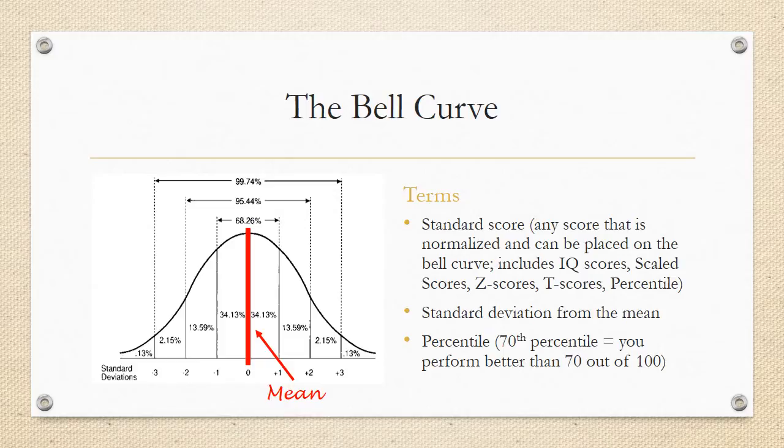So standard score, there are many of them. And often you can hear IQ scores, scaled score, Z scores, T scores, percentiles. The standard deviation is how far away from the mean is the score placed. The mean is directly in the center of the bell curve, as you can see with the red line there. And standard deviations sit on either side of the mean, positive to the right, negative to the left.